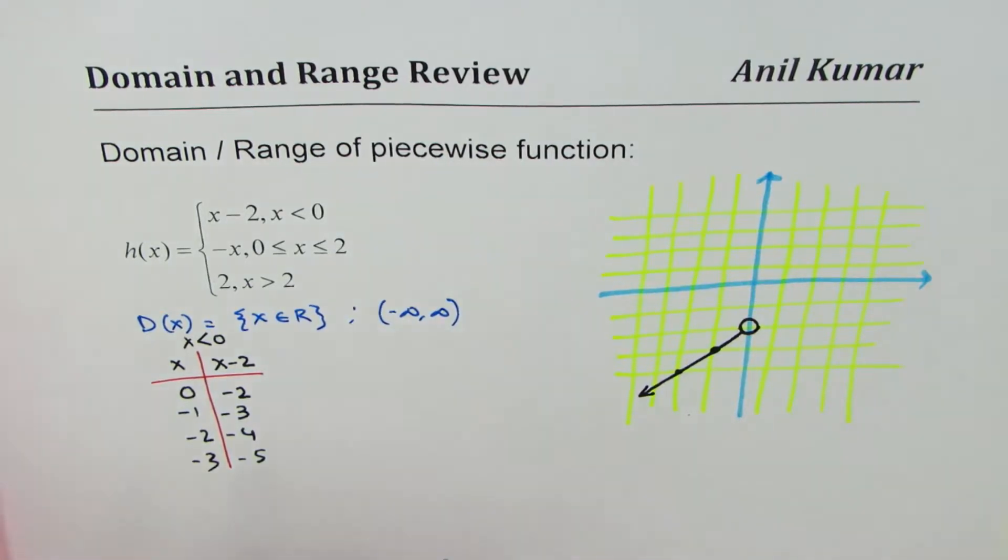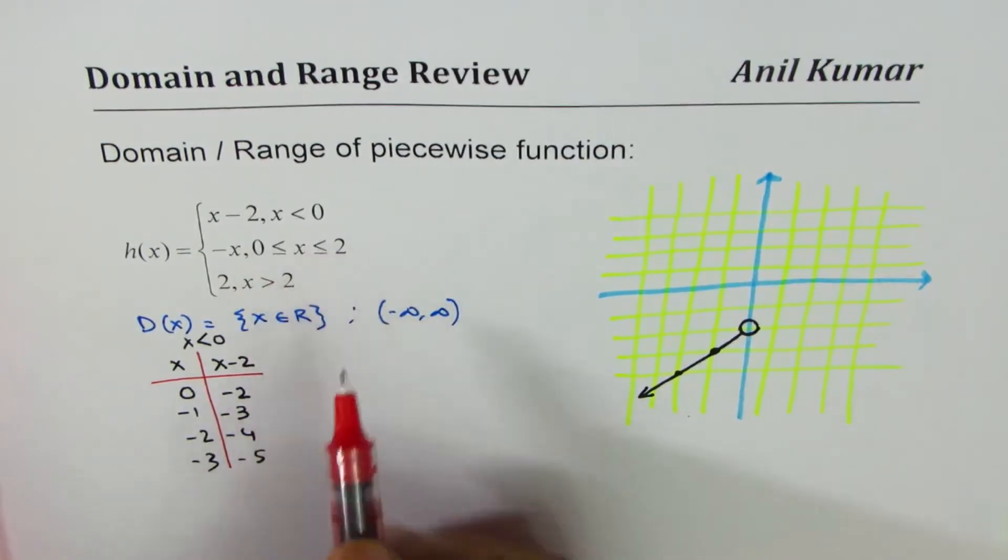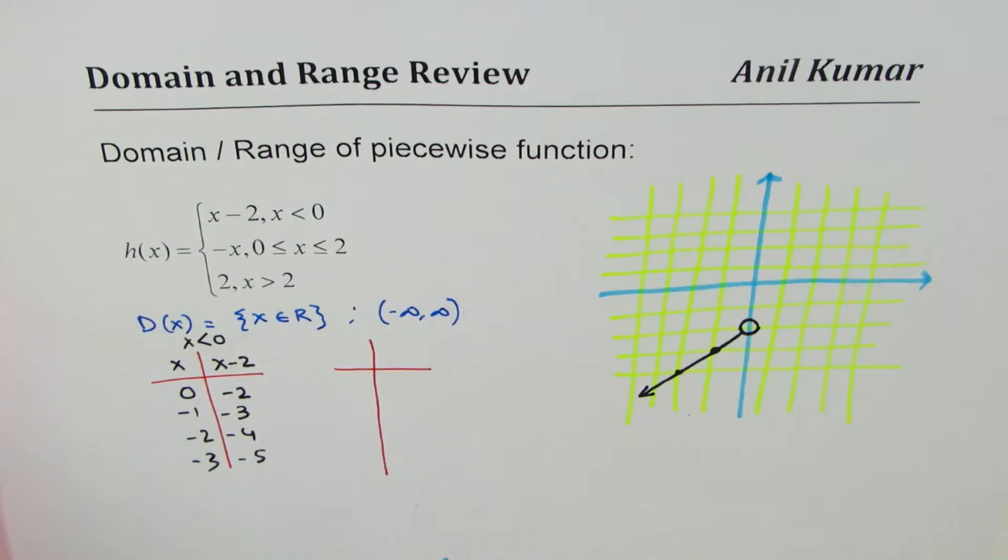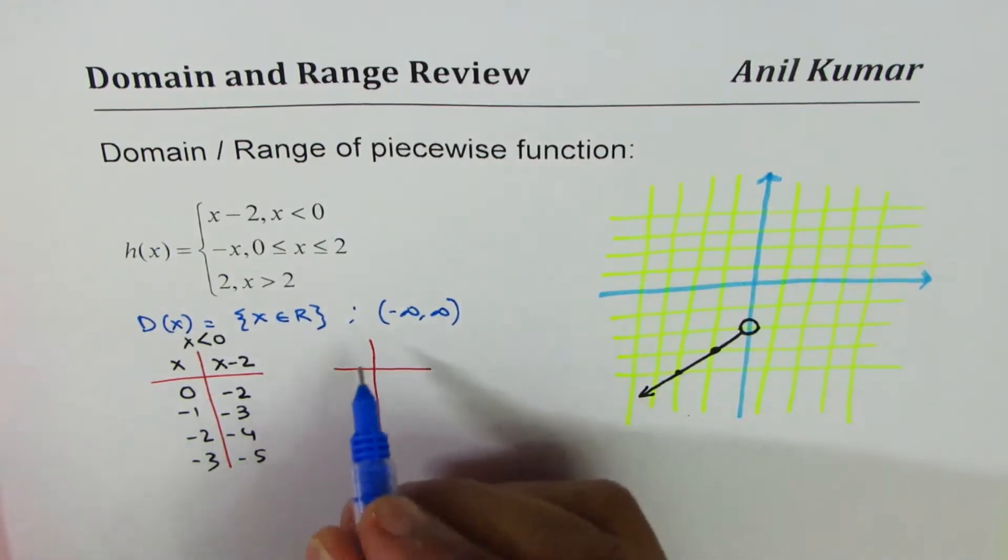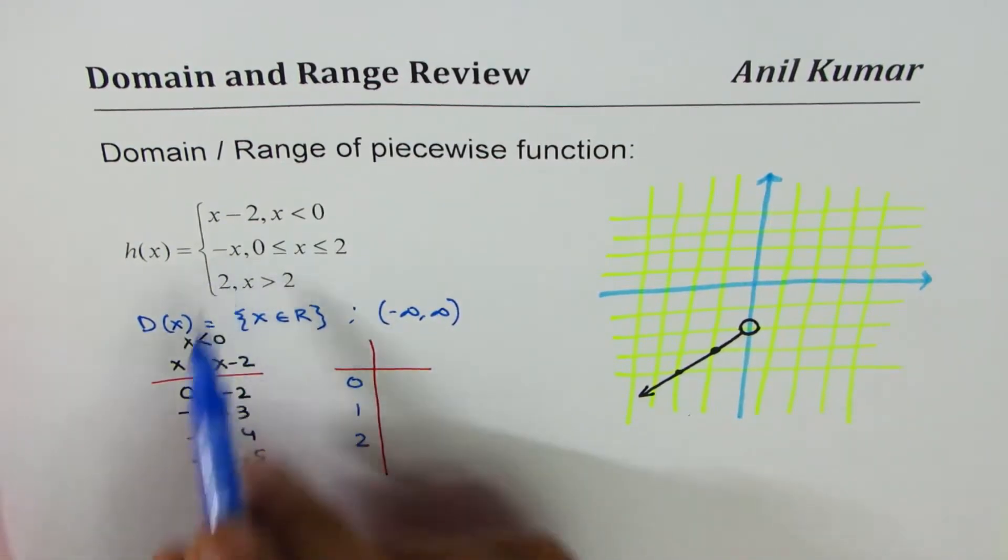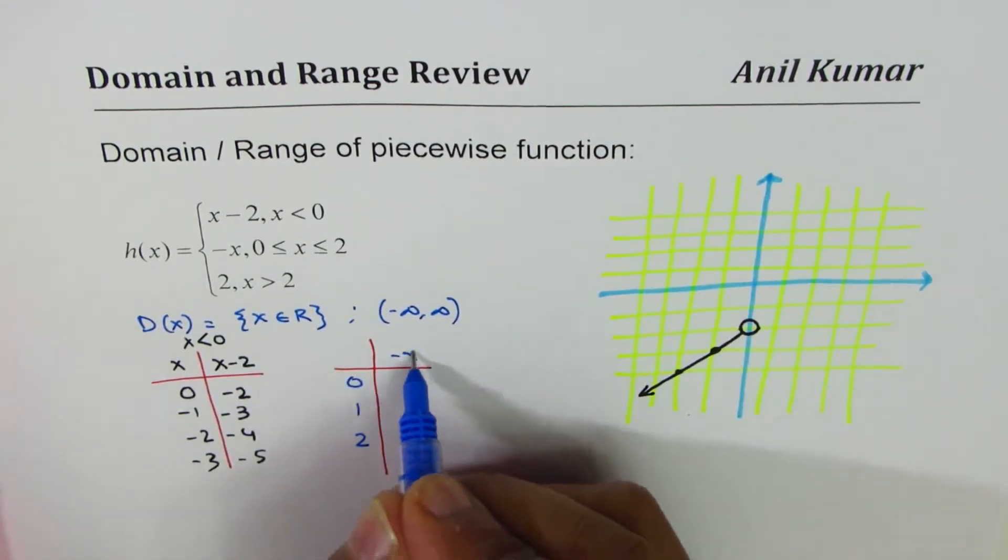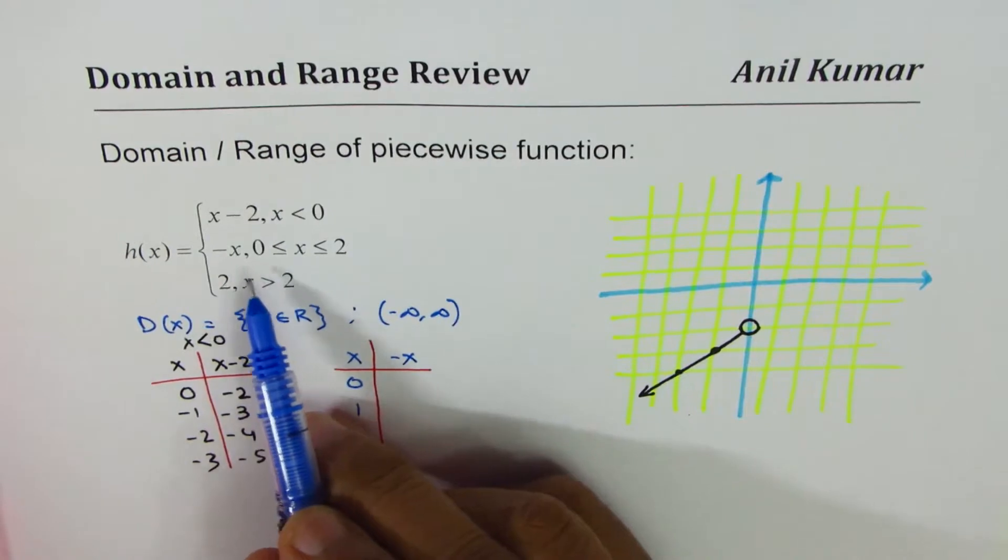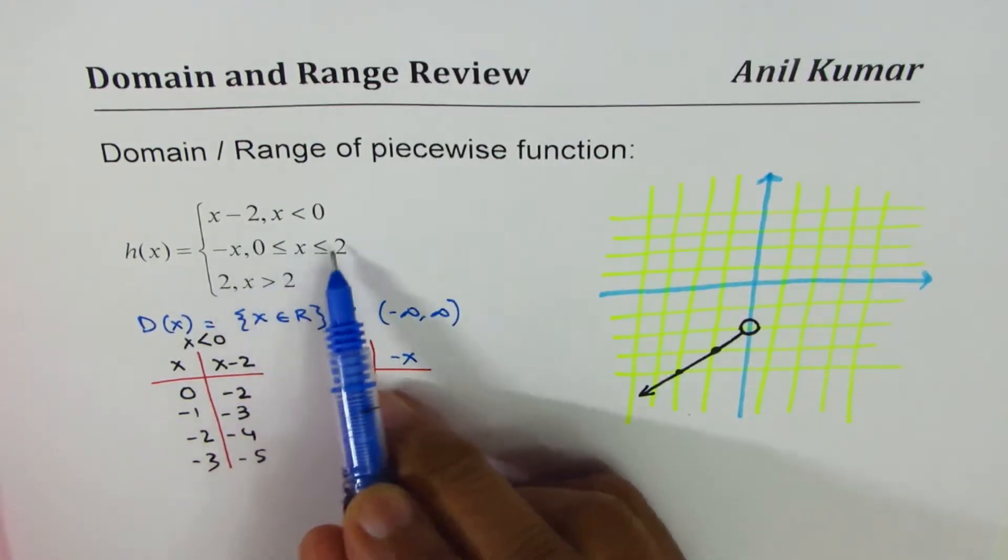Now the second piece is from 0 to 2 we are looking for values. So from 0 to 2 this is 0, 1 and 2. Since it's a straight line again minus x, these are the x values.